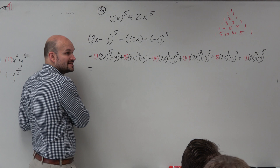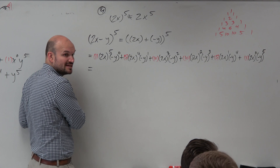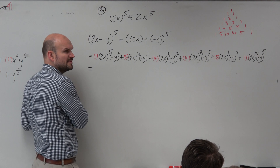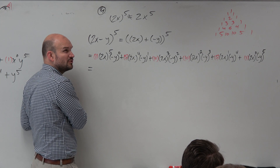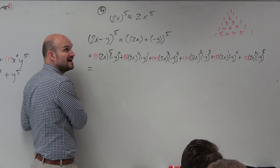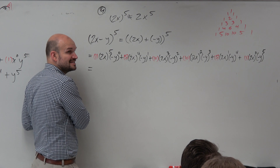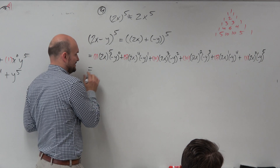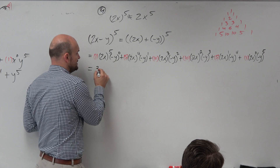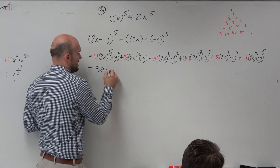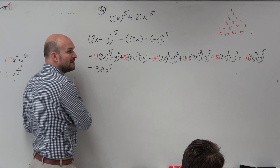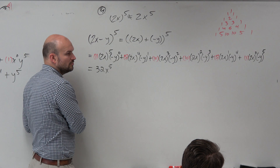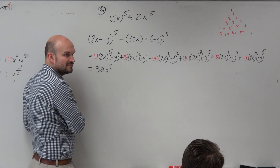2x to the fifth means 2x times 2x times 2x times 2x times 2x. So how many times? That's 2 multiplied 5 times, which gives me 32x to the fifth. Negative anything raised to the zero power is 1, so I'm just going to leave it off.